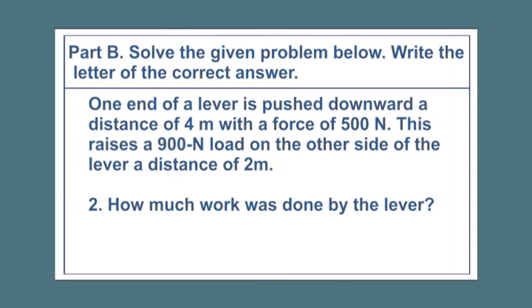Number 2, how much work was done by the lever? A, 500 joules. B, 900 joules. C, 1,800 joules. D, 2,000 joules.